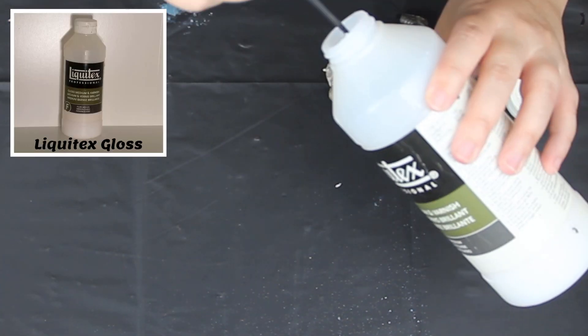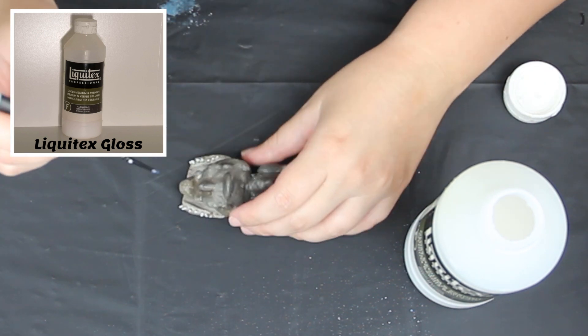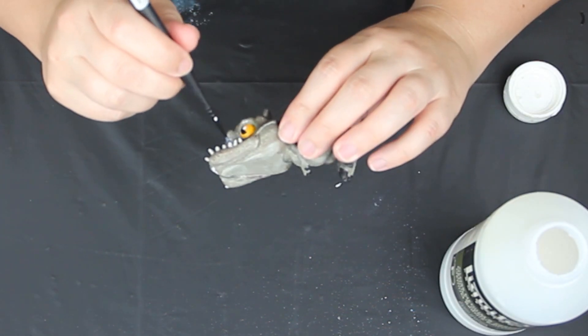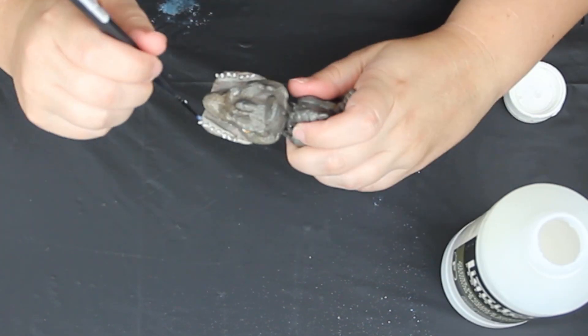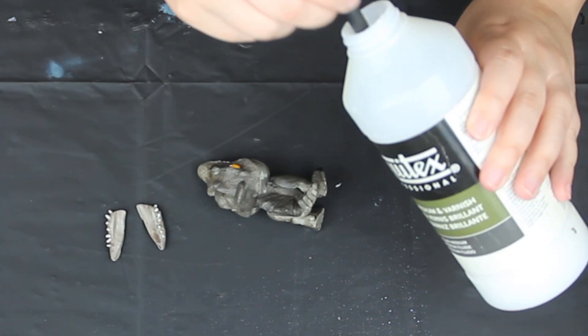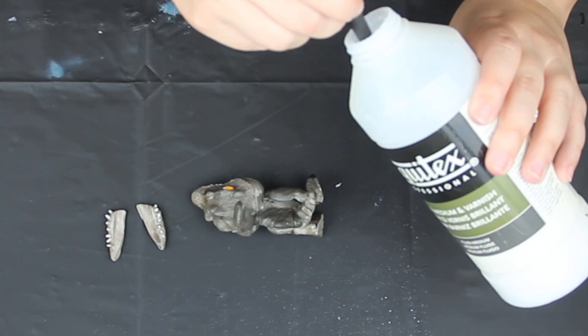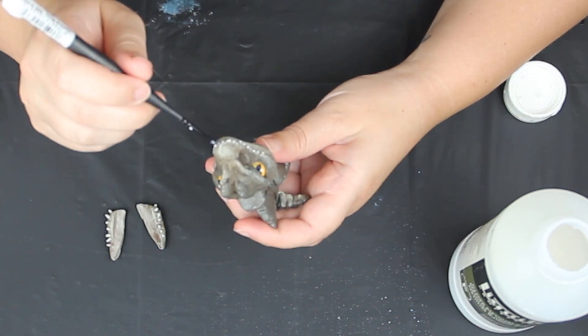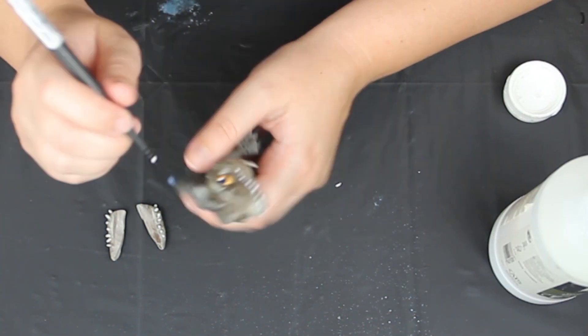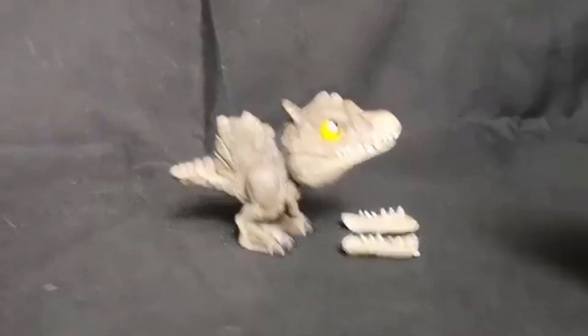Now I'm using Liquitex high gloss varnish to the outside of the teeth and the eyes. I can't do the inside of the mouth or the inside of the teeth and the snap jaw because if I do it sticks the jaw shut. So just the outside. And that's him done.